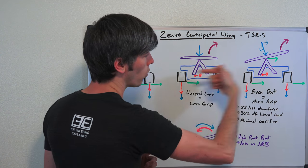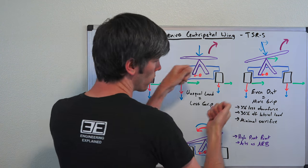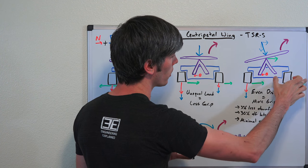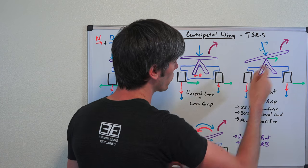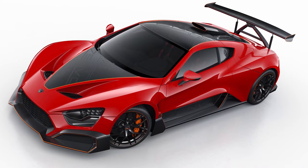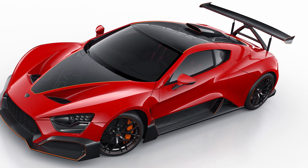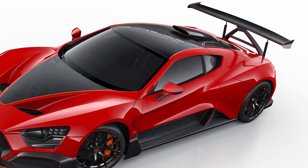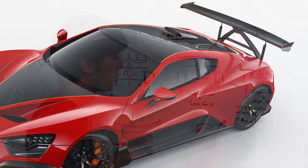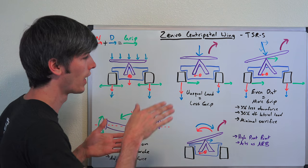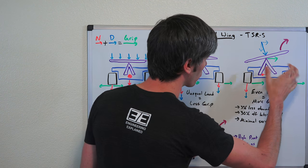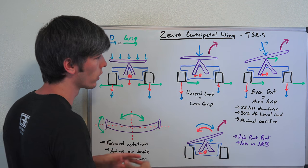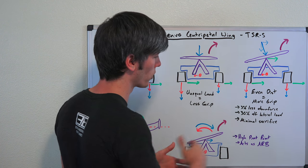So center of gravity, the car wants to go this way as you're turning to the right, but you've got your tires fighting against that so they're providing a counterforce, and that wing is also providing a counterforce. Now Zenvo claims that when this wing is tilted you're going to have about 3% less downforce, but of the total amount of downforce that's generated, you're going to have 30% of that force as a lateral load. So helping the car transfer that load back to the inside tire and have more even grip, better grip and able to corner at higher speeds.